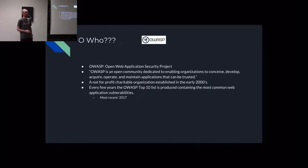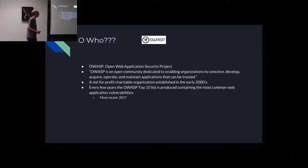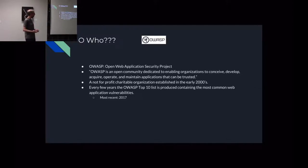So who is OWASP? Why do they have any weight in making this declaration? It stands for Open Web Application Security Project. Their mission: OWASP is an open community dedicated to enabling organizations to conceive, develop, acquire, operate, and maintain applications that can be trusted. It's a non-profit organization formed in the early 2000s and they're pretty well regarded in the security space. Every few years they issue a new Top 10 list of vulnerabilities web applications have. The most recent one was 2017.